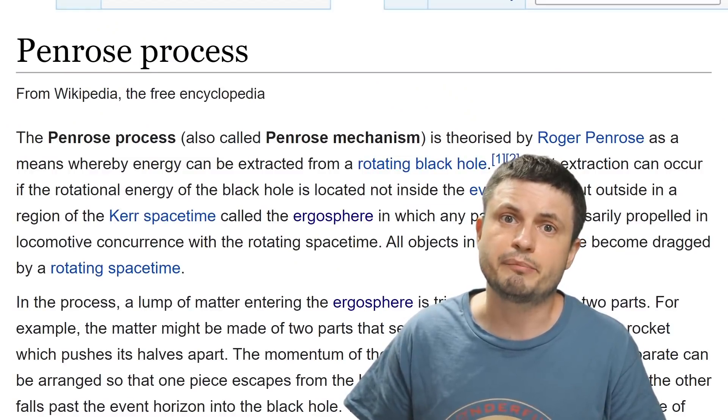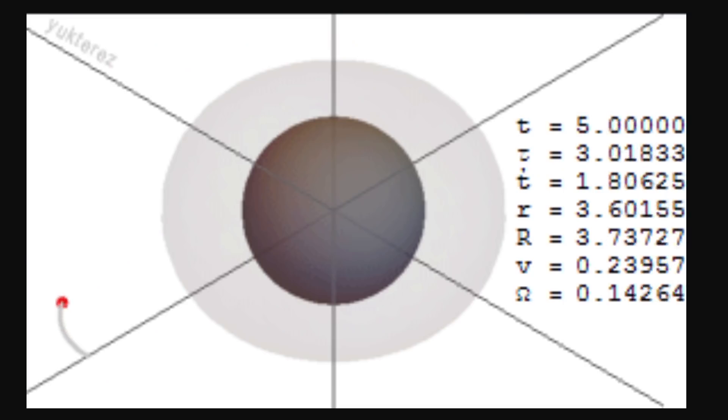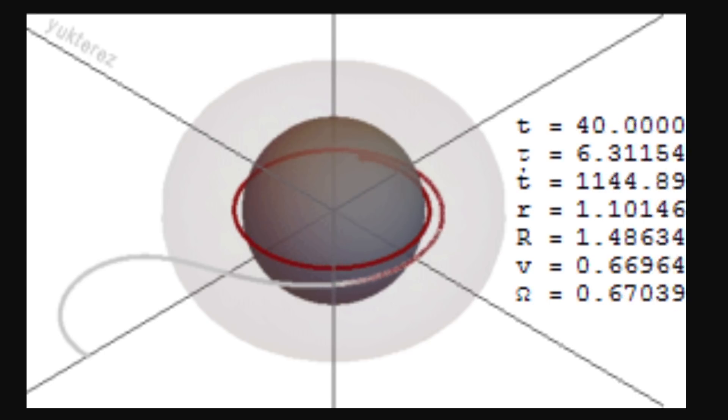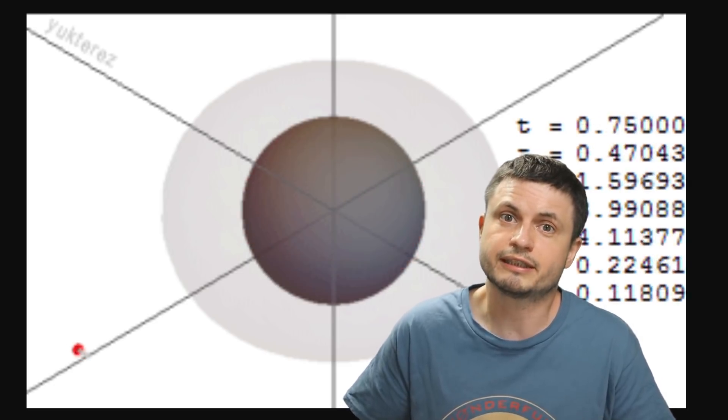Something that's currently known as the Penrose process. In other words, it provides the observational proof for the theory that we've had for a very long time that you can hypothetically extract energy from a spinning black hole. But how exactly does all this work and what exactly is this proof?